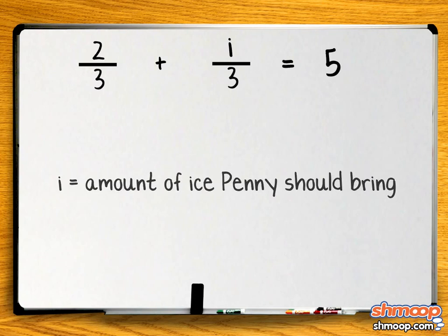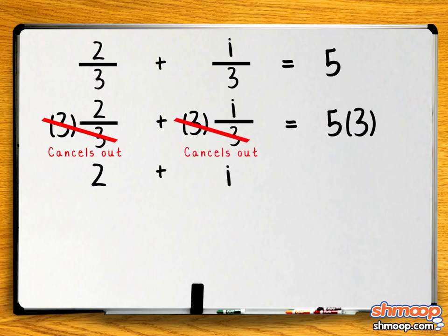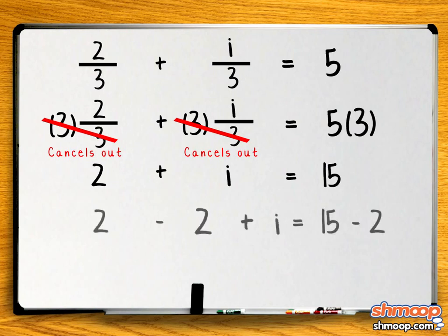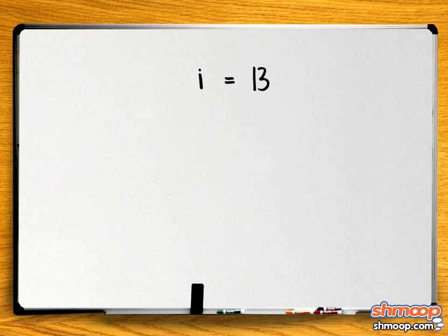Now we need to simplify things. We'll do this by multiplying everything by three to get rid of the fractions. Two-thirds times three is two. i over three times three is i. Five times three is fifteen. So our equation is now two plus i equals fifteen. All we have to do now is subtract two from both sides. Fifteen minus two equals thirteen, so Penny will need to bring thirteen pieces of ice.